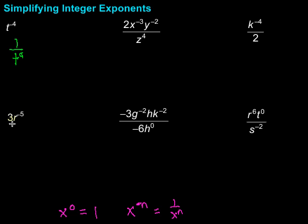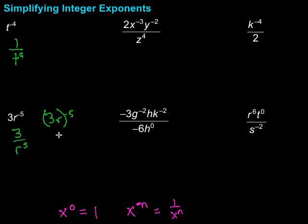How about this one? We have 3r to the negative fifth. For this one, it's really important that we're aware of what that negative fifth power is being applied to. The only thing it's being applied to in this case is the r, so the r is the only thing that will get flipped to the bottom. This will be 3 over r to the fifth. Sometimes people think the 3 goes down with it — that would only be the case if we had (3r) to the negative fifth, which would give us 1 over (3r) to the fifth. So be careful and be aware of exactly what that power is being applied to.